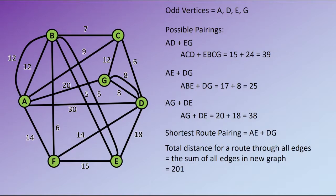When you're doing a question in an exam, you may find that they give the total weight of the graph before you've added any additional edges. Then all you would need to do is take that number that they've calculated for you and add the 25 in this particular case.